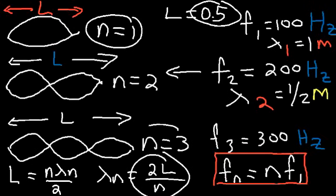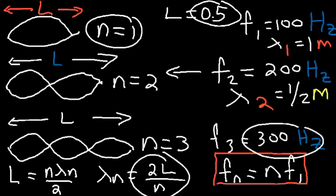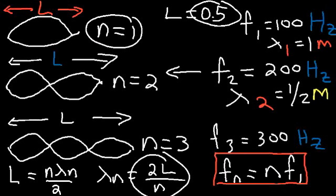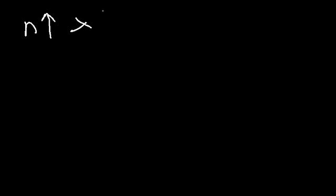Now what if we triple the n value? What if there are three standing wave patterns? Notice that the frequency increased by a factor of 3, so therefore the wavelength is going to decrease by a factor of 3 — it's going to be 1 third of its original value. So lambda 3 is going to be 1 over 3, or 1 third of a meter. So whenever n increases — that is, the number of standing waves — the wavelength will decrease and the frequency will increase.